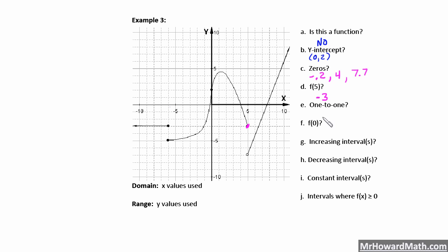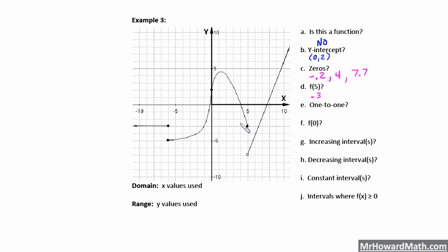Next, is it one-to-one? We need to see if it passes the horizontal line test. No — it fails the horizontal line test in many places: here, here, here. So this is not one-to-one because it fails the horizontal line test.